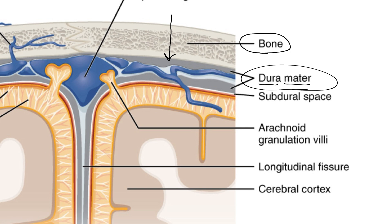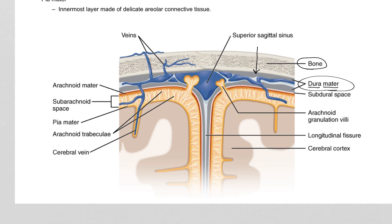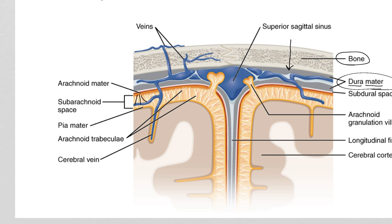Underneath the dura mater, you get another layer called arachnoid mater. The easy way to identify it is that it has what look like cobwebs coming down out of it — strands of connective tissue. Someone thought it looked like spider webs when they first saw it under a microscope, and so arachnoid, because spiders are arachnids, it looks like cobwebs. Pia mater is the innermost and by far the most thin and delicate of the meninges, and it is directly contacting brain tissue.